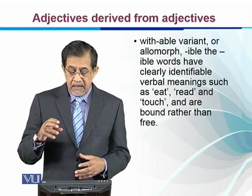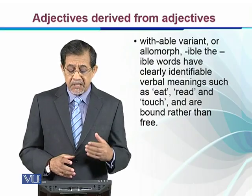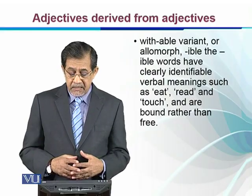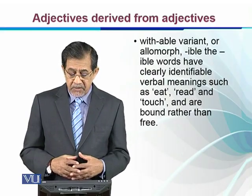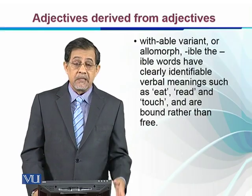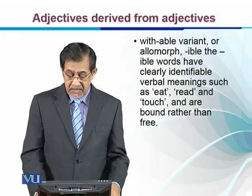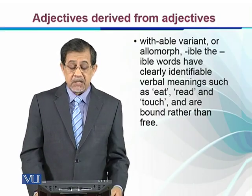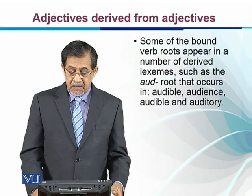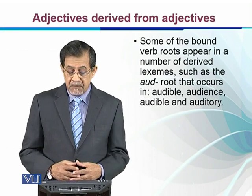With -able (or its variant -ible), the -able words have clearly identifiable verbal meanings, such as eat → eatable, read → readable, and touch → touchable — these are free morphemes. Other base forms are bound rather than free, meaning they cannot stand alone as independent words.